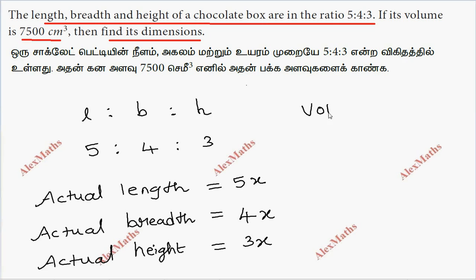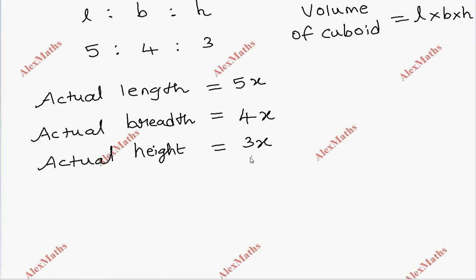For the volume of a cuboid, the formula is L into B into H.